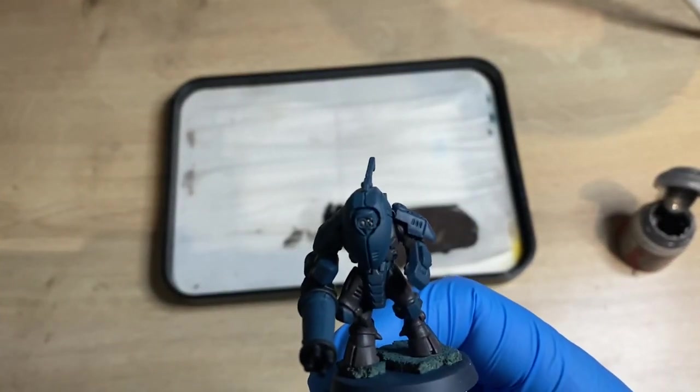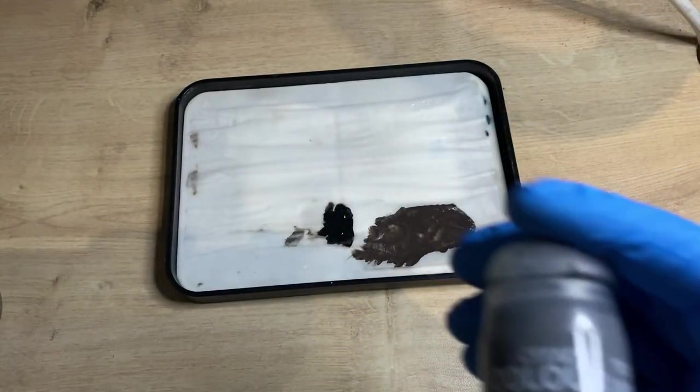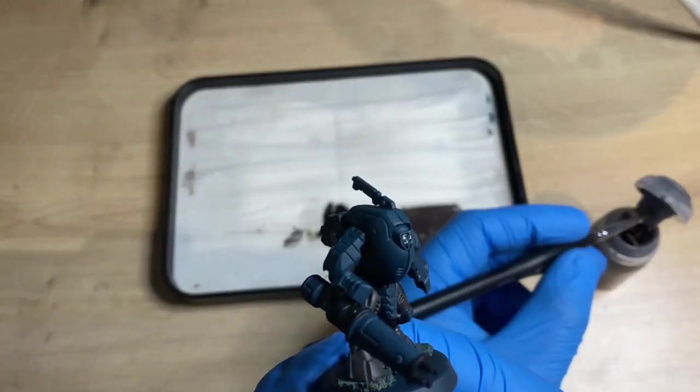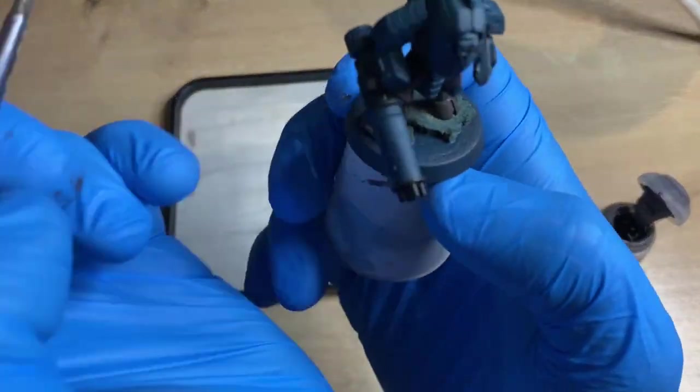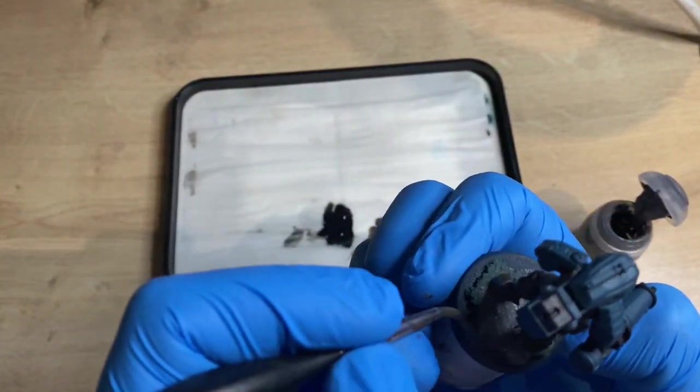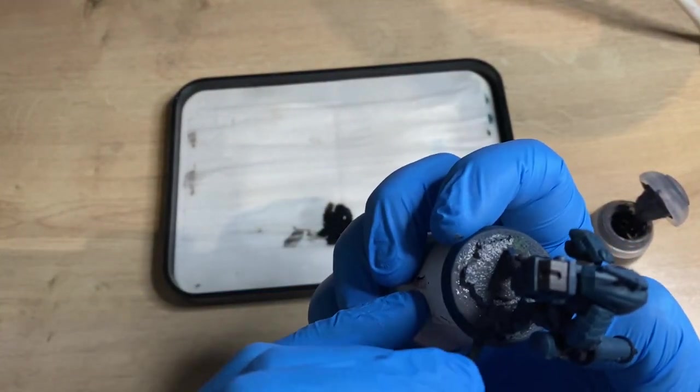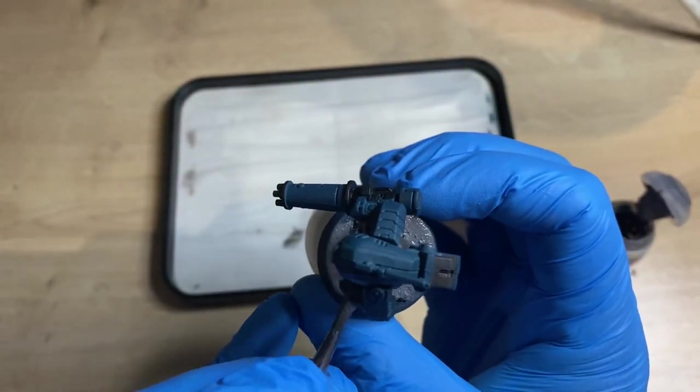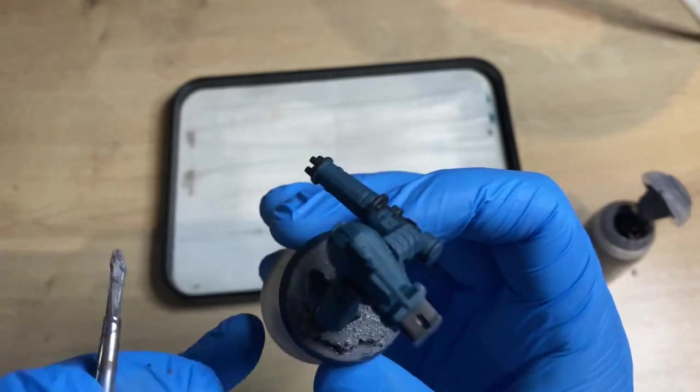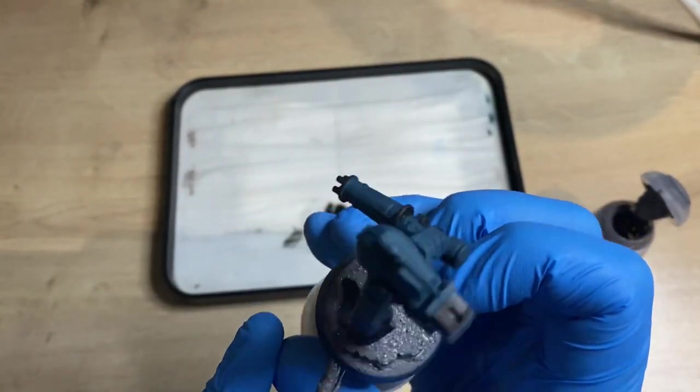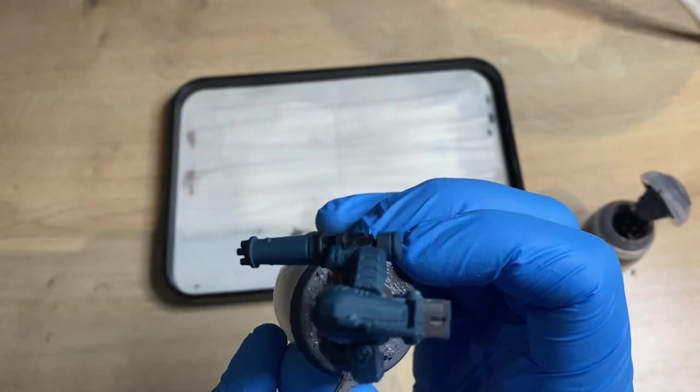The next paint you'll need is Astrogranite, which is a technical basing paint by GW. I know it's a bit weird to start the basing process whilst the model has not been finished yet, but there's good reason for that. Everything on the model at the moment is drying, so what we want to do is get a decent thick layer of Astrogranite onto our base. You can see that I've glued my models onto some two, maybe three millimeter cork board, just to give it that debris-ridden look. They're going to be like a city fighting sept.